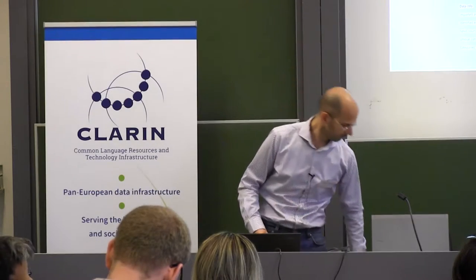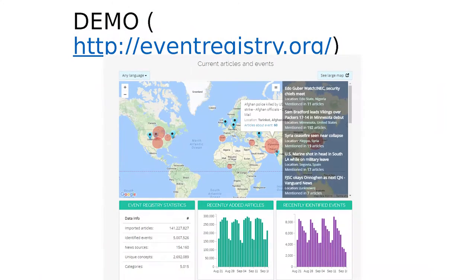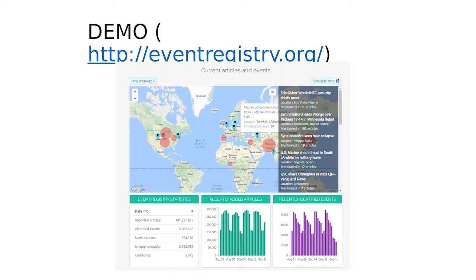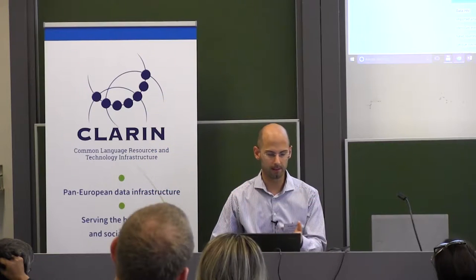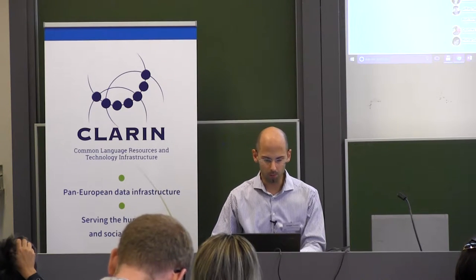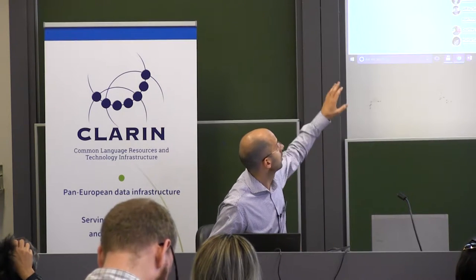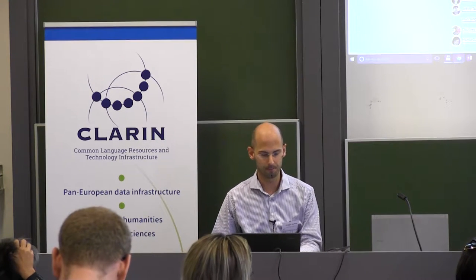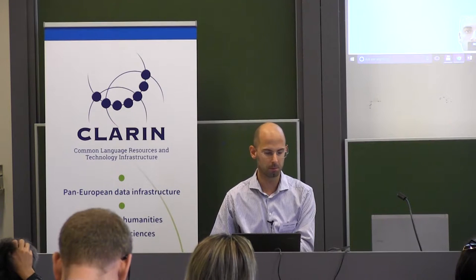Now I'll switch to the demo. The demo is available at eventregistry.org. What you can see is basically the live feed of events as they are updated with new articles coming into the system. Each circle on the map is one event currently being updated with new information. For example, we have an event where a man was shot after killing eight people in Minnesota. Currently in the system we have 140 million news articles, and from these we have identified five million events. Below you can see what's currently popular in the news from the perspective of people, organizations, countries, and top events.